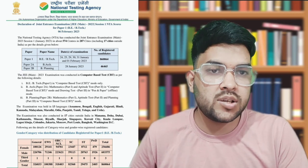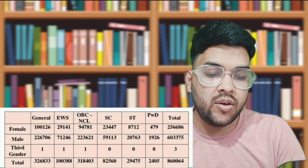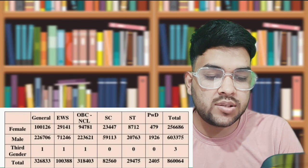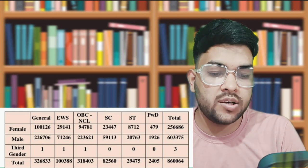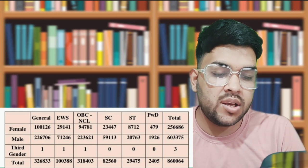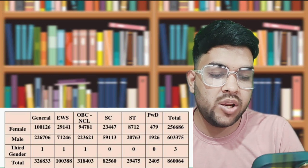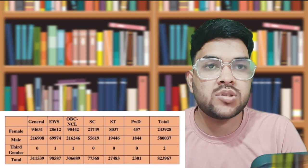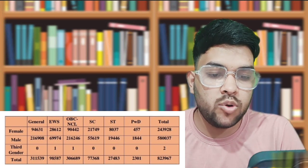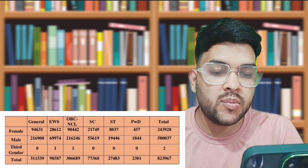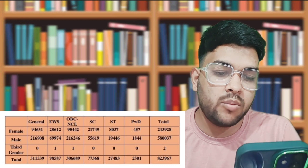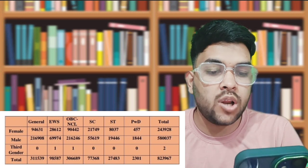Let me first discuss registered students category-wise: General – 3,26,000; EWS – around 1 lakh; OBC – 3,18,000; SC – 82,000; ST – 29,000; PWD – 2,400. Appeared students: General – 3,11,000; EWS – 98,000; OBC – 3,06,000; SC – 77,000; ST – 27,000; PWD – 2,300.